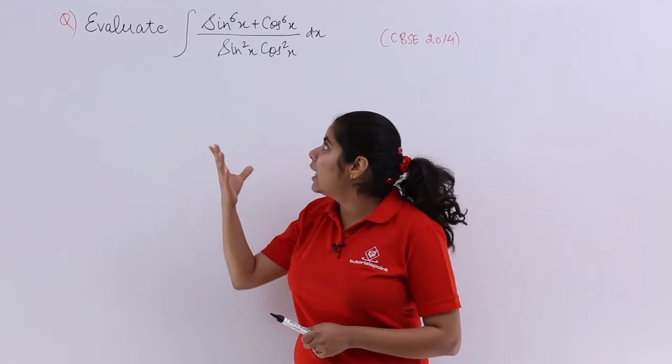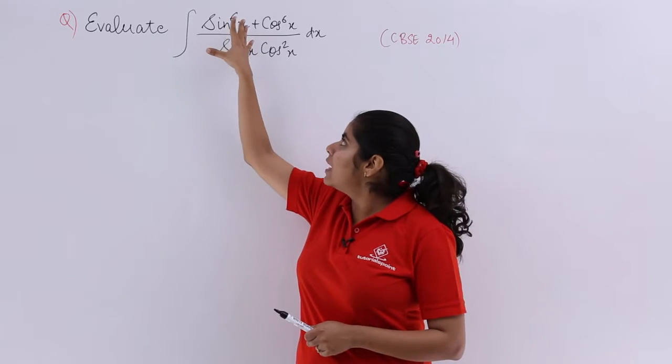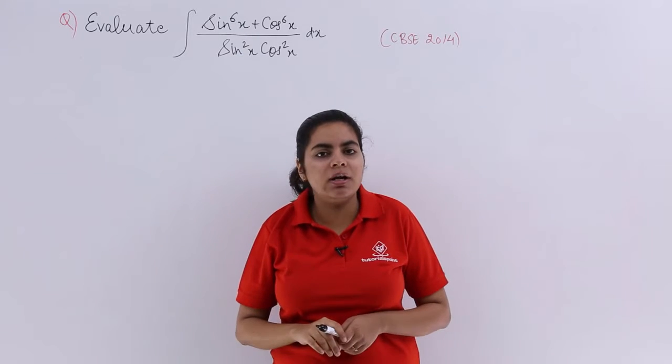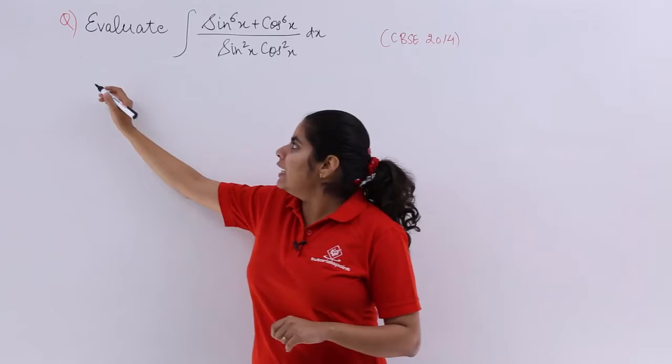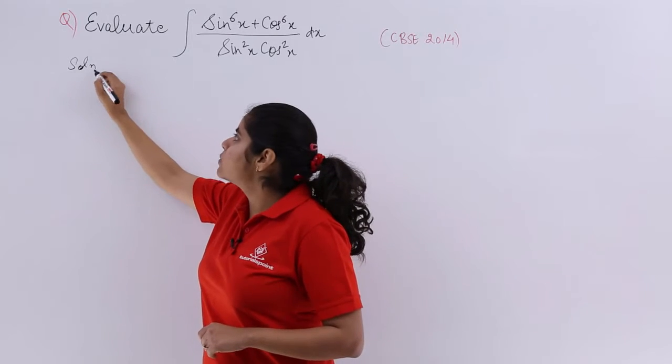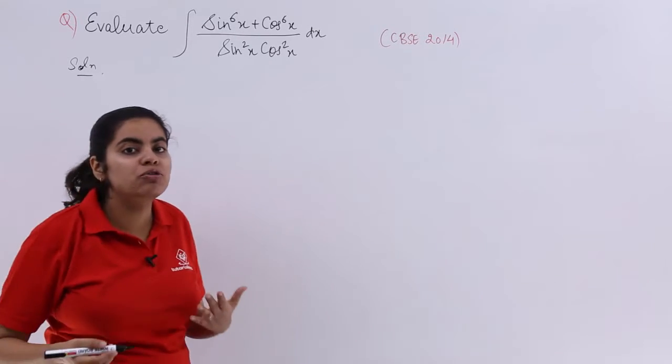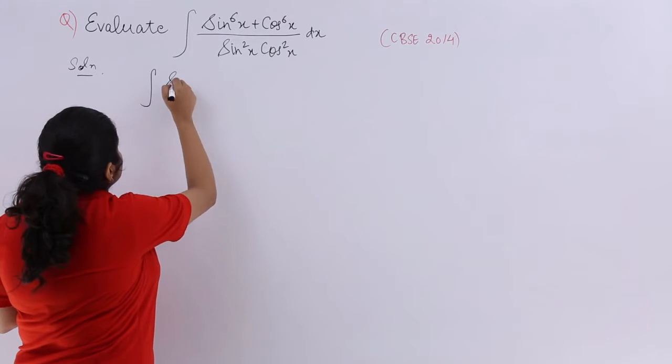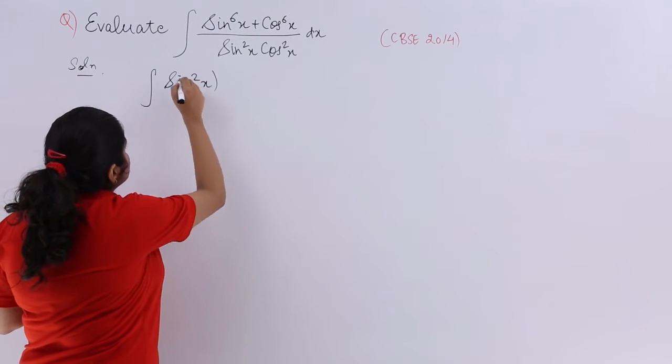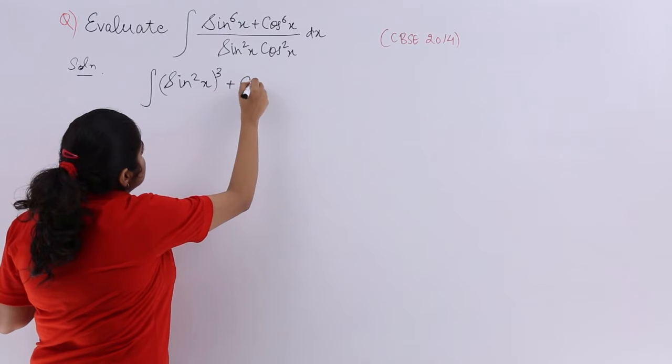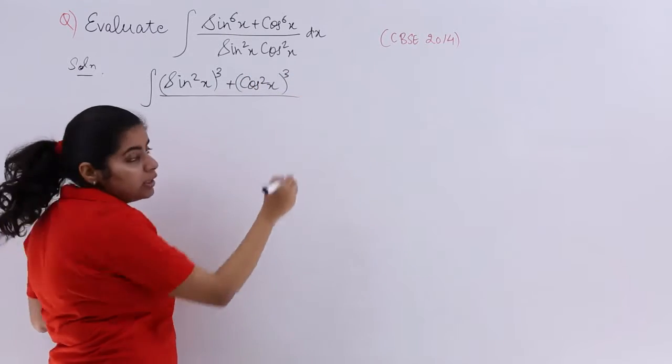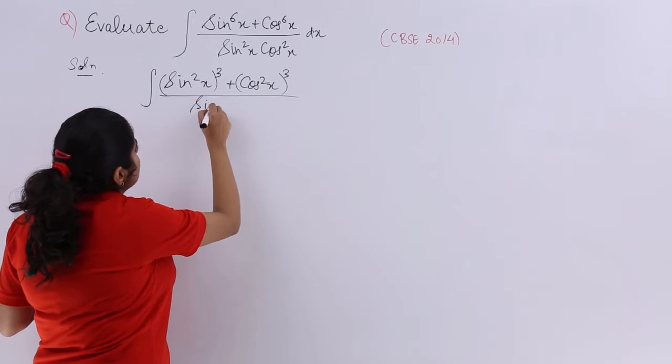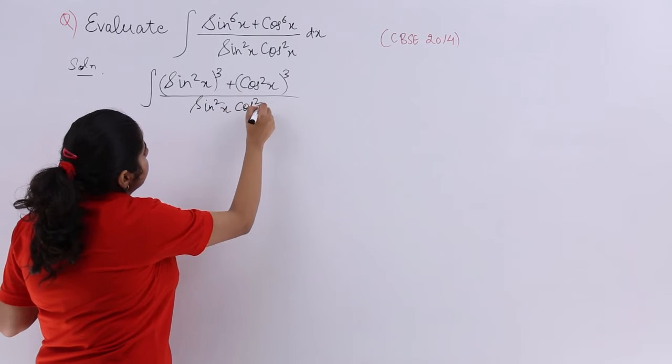Can you break sin raised to the power 6x in terms of something called sin square x? Definitely I can. So let me write the heading solution. It is sin square x whole cube plus cos square x whole cube upon sin square x cos square x dx.